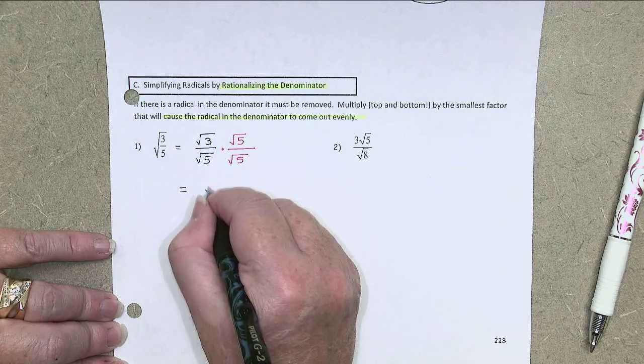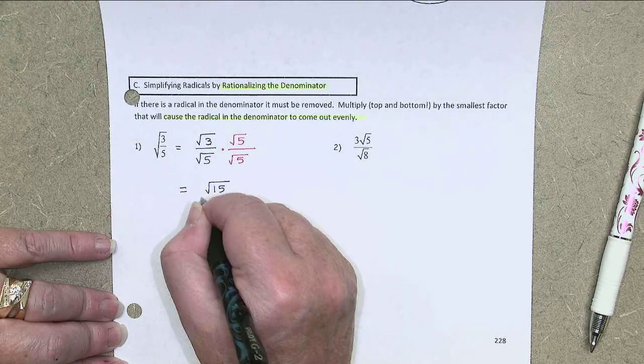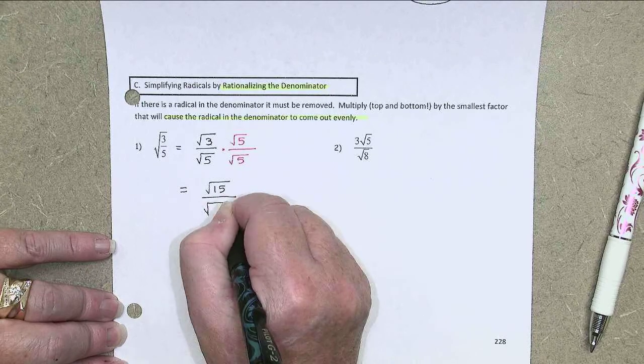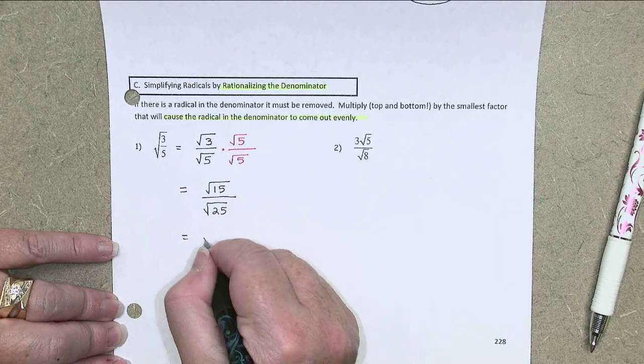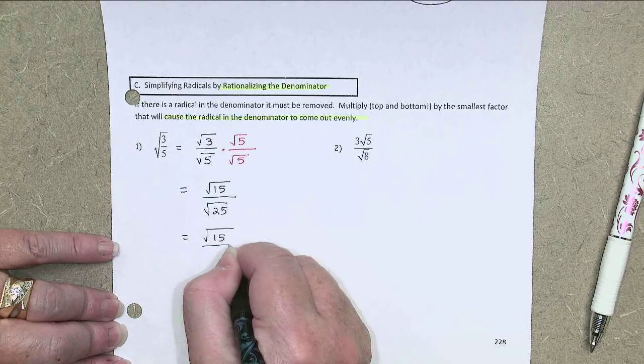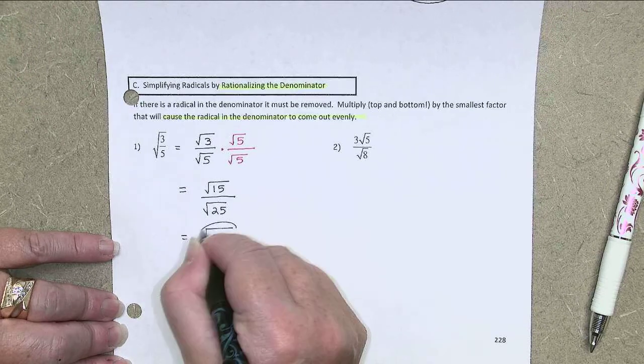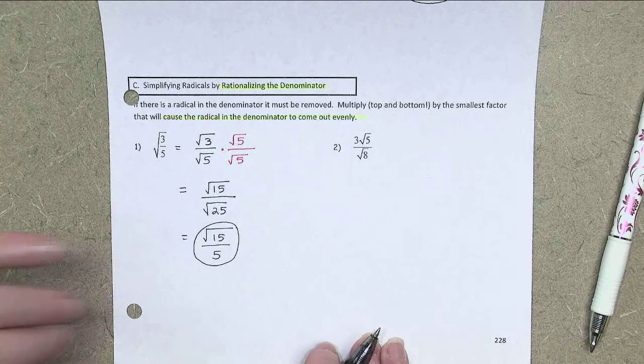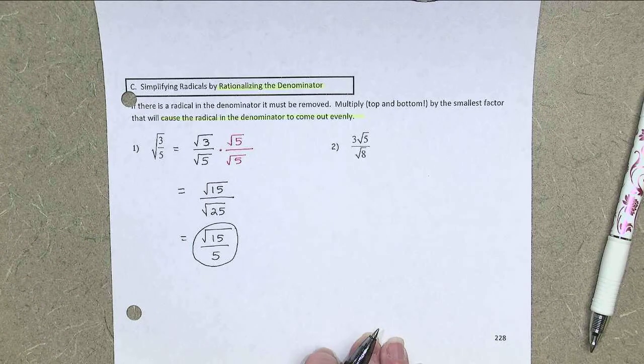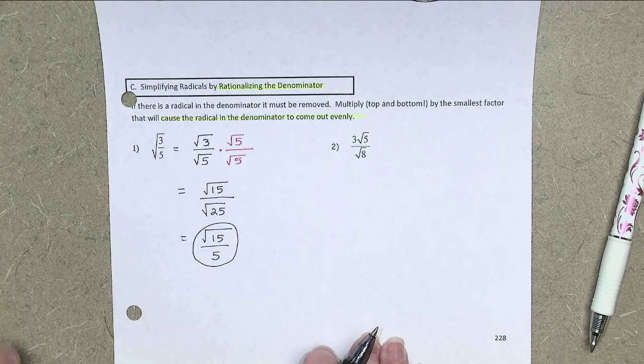So I'm going to multiply by the square root of 5, and of course, I have to multiply by a form of 1 so I don't change the values, so same thing top and bottom. On the top now, I have the square root of 15. On the bottom, the square root of 25, which, as designed, does come out evenly as a 5 in the denominator. So always keep that goal in mind. You want the denominator to come out evenly.